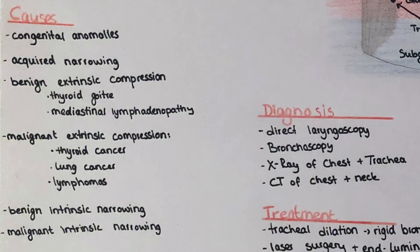There can be different causes, like for example congenital anomalies, but it can also be an acquired narrowing. There are benign extrinsic compression factors like a thyroid goiter, mediastinal lymphadenopathy such as tuberculosis, and also vascular anomalies. Then there are malignant extrinsic compression factors, for example thyroid cancer, lung cancer, and lymphomas.